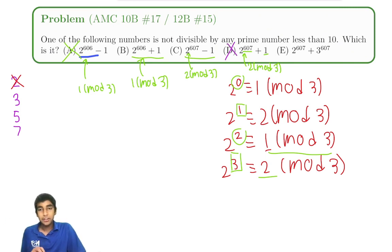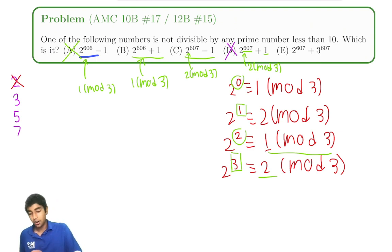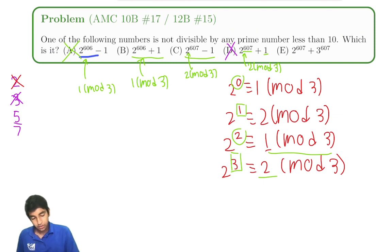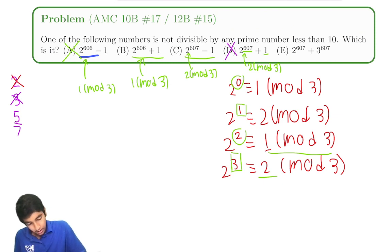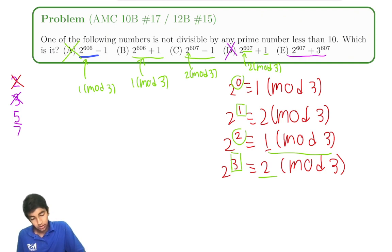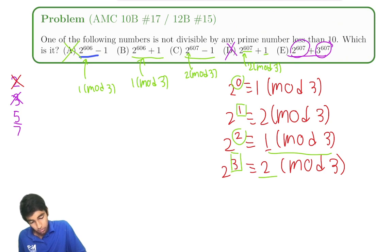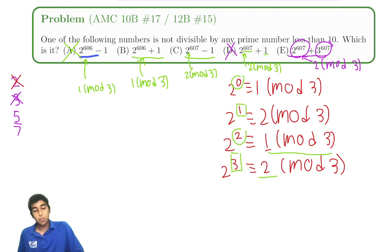We've already eliminated two choices and need to eliminate two more. For the remaining choice, 2^607 plus 3^607: 3^607 is obviously a multiple of 3, and 2^607 is 2 mod 3, so 2 mod 3 plus 0 mod 3 is 2 mod 3 — not divisible by 3. That choice still remains.